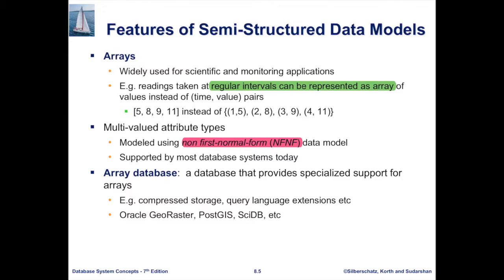The representation is kept as lean as possible — just a listing of measurements through time. There are also multi-valued attribute types. If you recall, the requirement of first normal form means it's no longer 1NF if we allow multi-valued attribute types. In fact, these representations are supported by most database systems today. There are specific databases made for this, including Oracle GeoRaster, PostGIS, and SciDB for scientific applications.